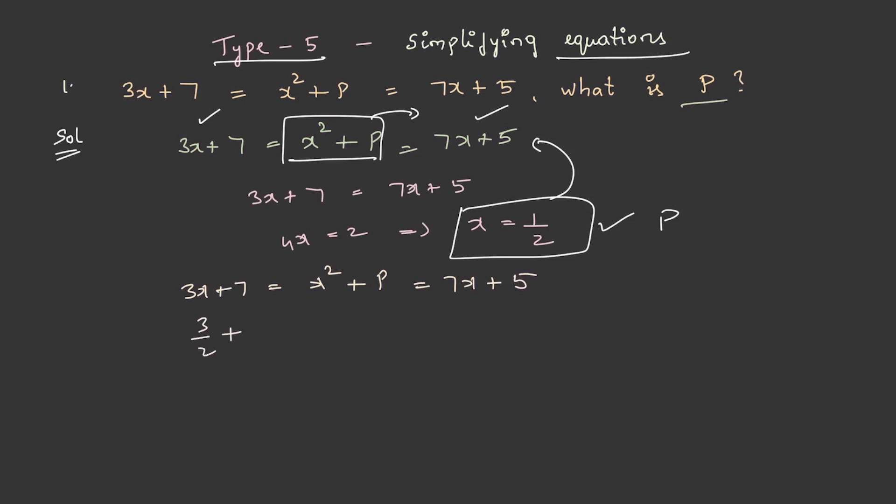we get 3/2 + 7 = 1/4 + p = 7/2 + 5. We can either take this one or this one, or the second and third terms, to get the value of p.